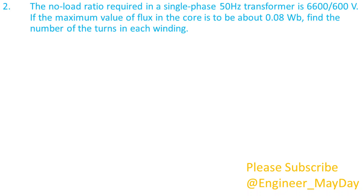Here is a second question. The no-load ratio required in a single-phase 50 hertz transformer is 6,600 over 600 volts. If the maximum value of flux in the core is to be about 0.08 weber, find the number of turns in each winding.